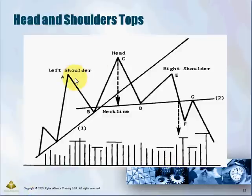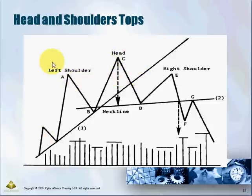In the head and shoulder top, we have a few key points. Firstly, you have the left shoulder, which is a lower point, then the head, and then the right shoulder. There is also a prior trend — the prior trend for head and shoulder top should be an uptrend. This is the first prerequisite. For volume: the left shoulder usually has the highest volume of the three points, followed by the head in the middle, and the right shoulder should have the lowest volume.